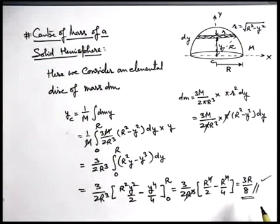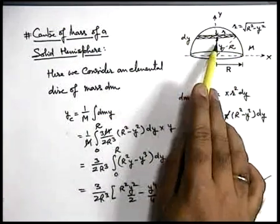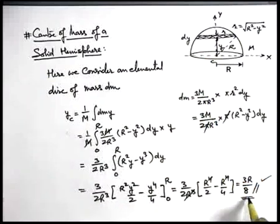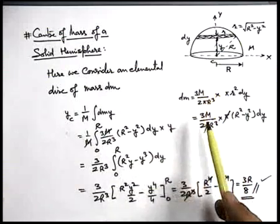which is again a useful result to be used in various problems, which says that for a solid hemisphere its center of mass is located at a height three R by eight from the center along the line passing through center normal to its base.